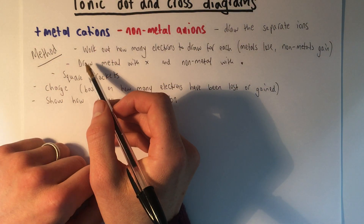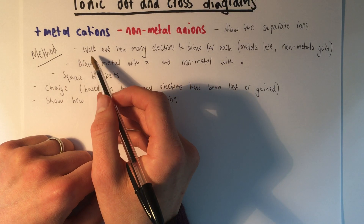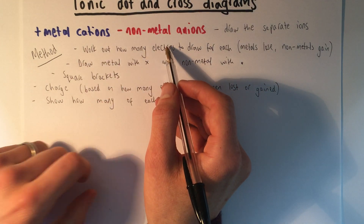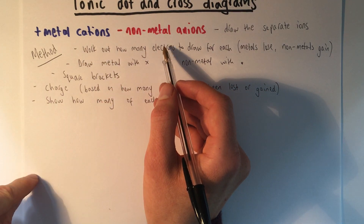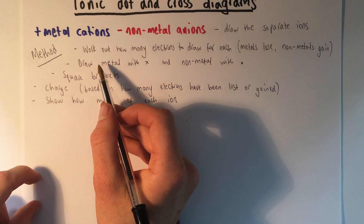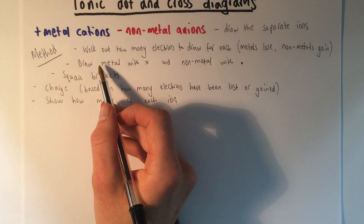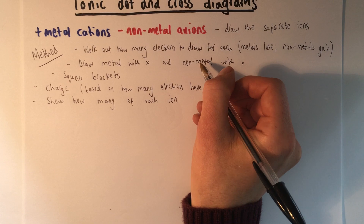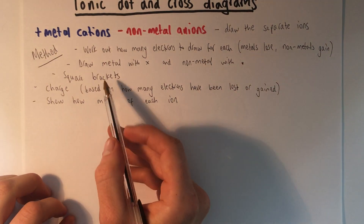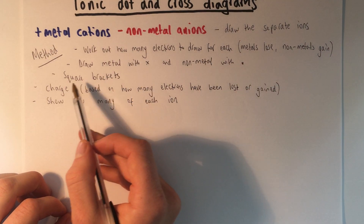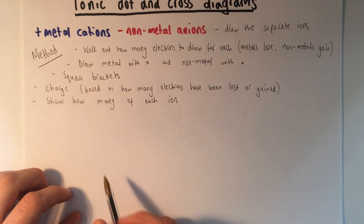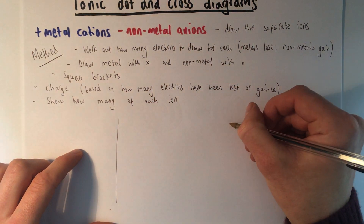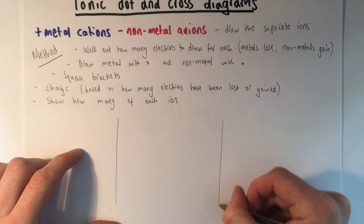This is the method I'm going to follow. First, for each of the three examples, we'll work out how many electrons we're going to draw for the metal and the non-metal. We're going to draw them out — the metal will have crosses for electrons and the non-metal will have dots. Then we're going to put them in square brackets with the charge, and show how many of each. We'll do three examples.